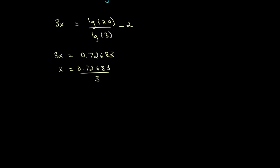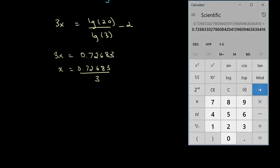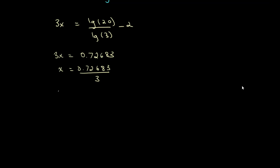And then x is equal to 0.72683 divided by 3. And from this we get, let's see, this number divided by 3 is equal to 0.242. Yeah, that's right. x is equal to 0.242.